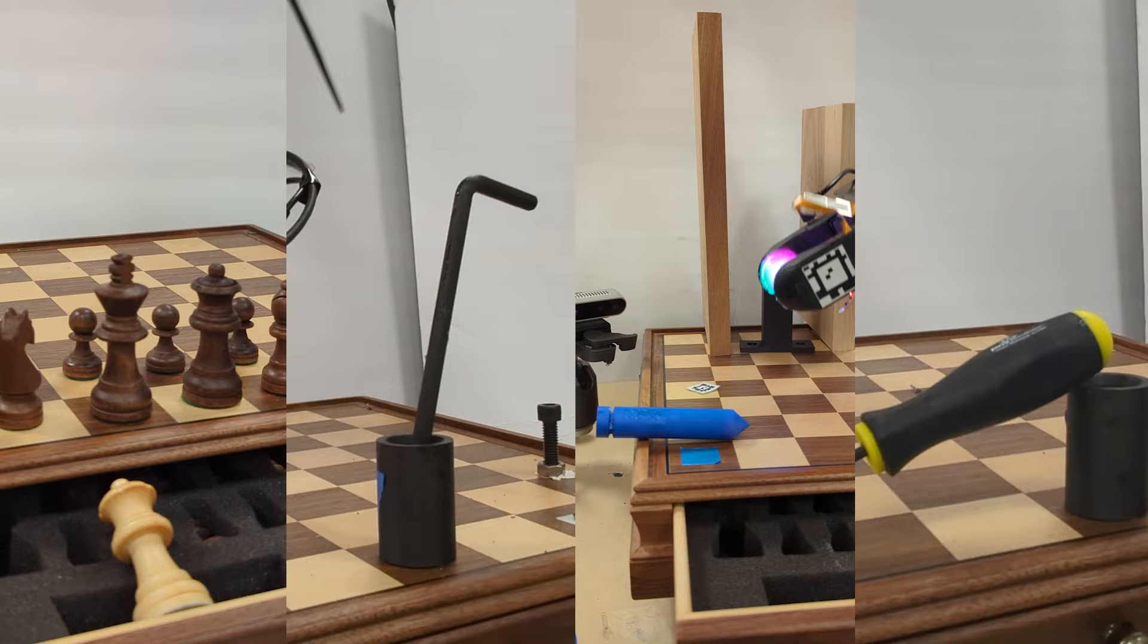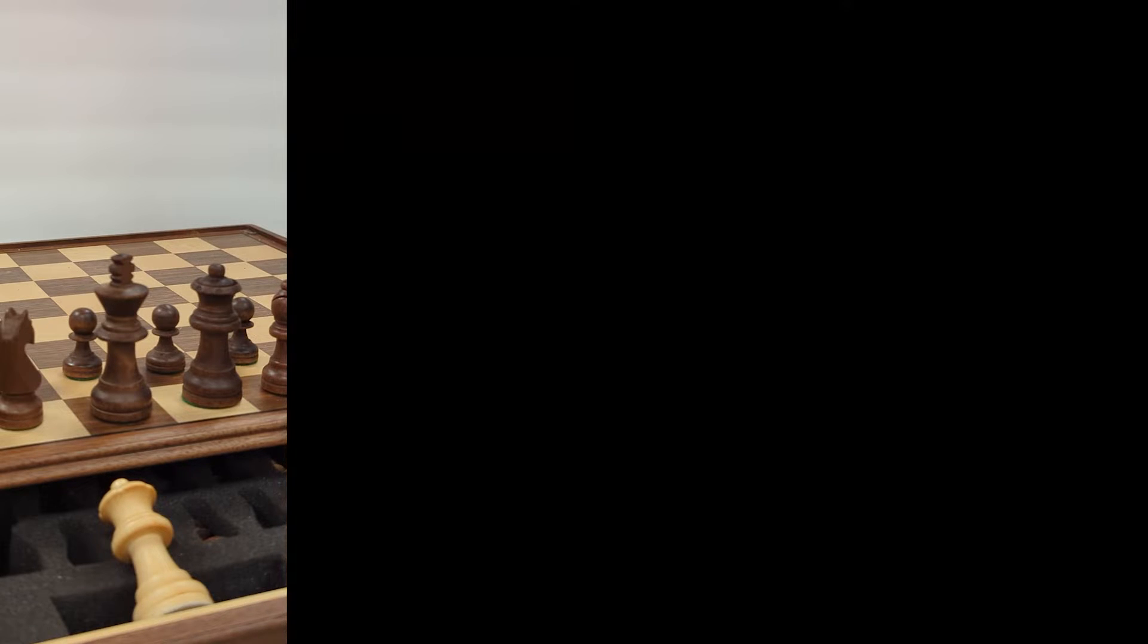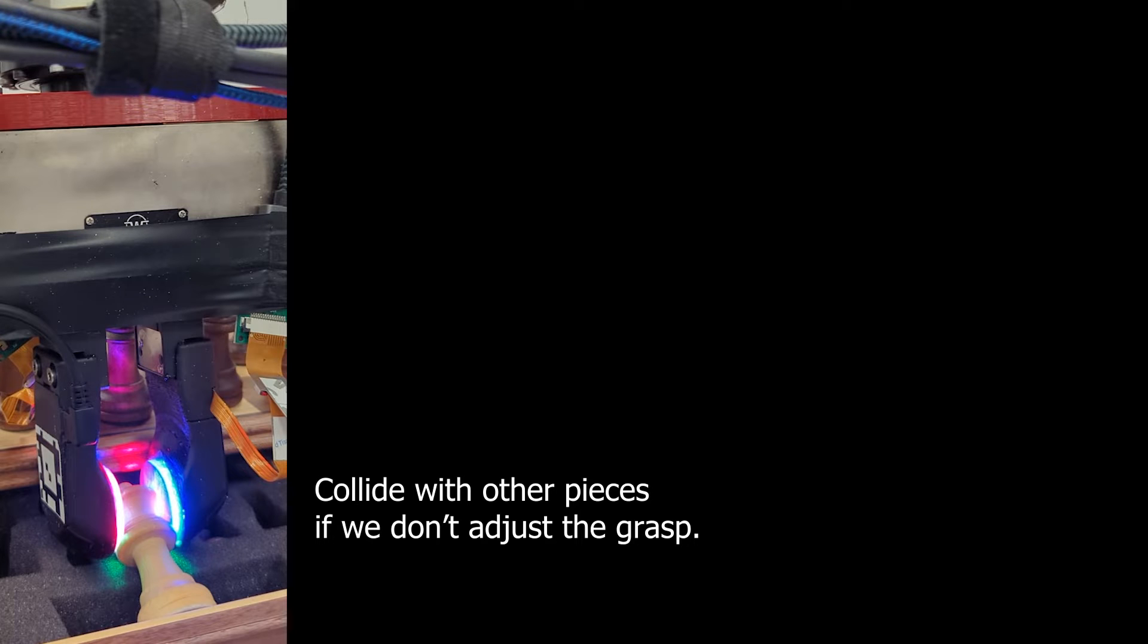Let's consider some real-world tasks where in-hand object manipulation is necessary. Imagine we want to place a chess piece securely on a chessboard without interfering with other pieces. Without re-grasping, there's a risk that the robot could collide with other pieces.